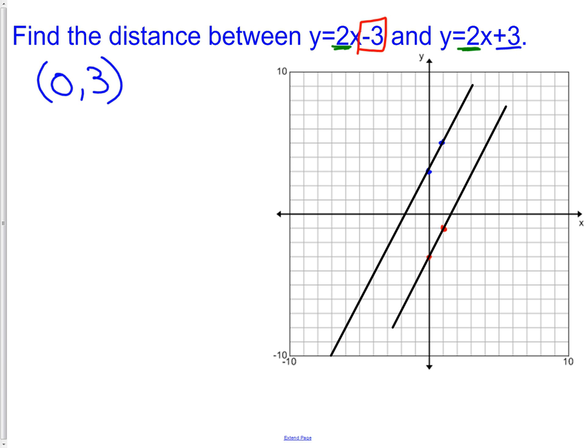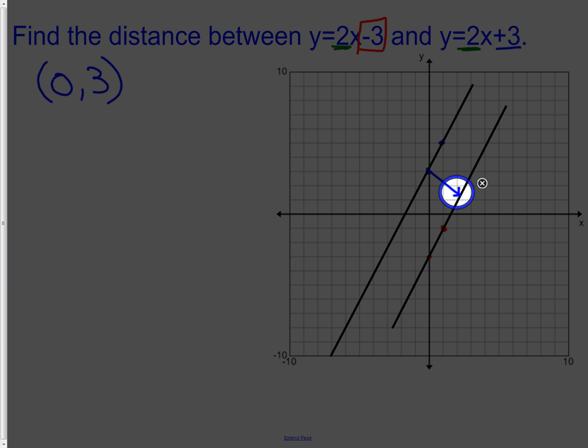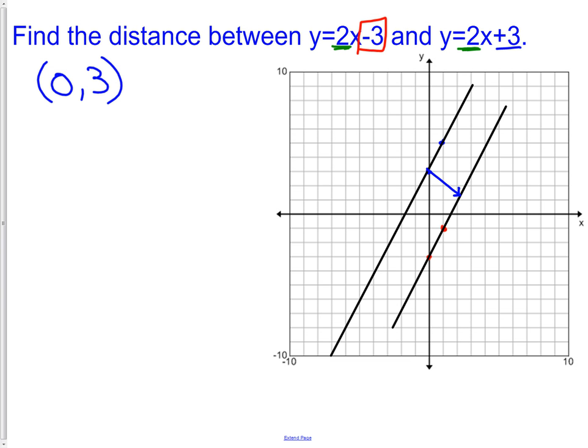What I need to now use the construction technique to figure out is where is the other point located? It's over there, but we don't know where. We don't want to use guesstimating. We actually want to use our construction method. Our construction method, we need our compass first.